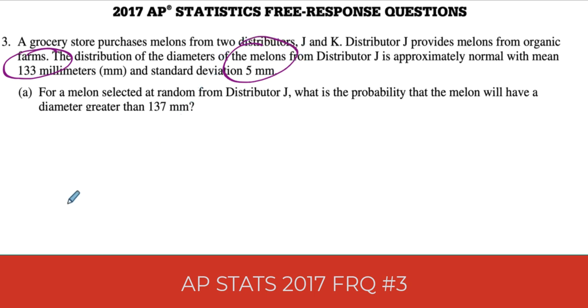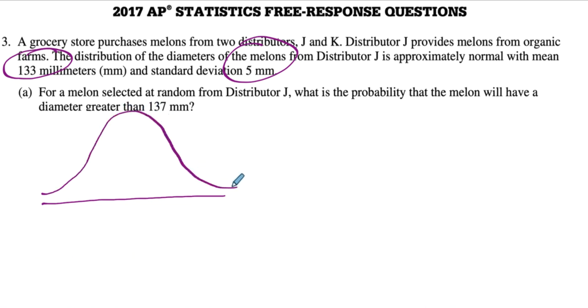When I answer this question, I always draw a picture. We're going to draw a normal distribution and label what mu is. Here mu is 133, that is the mean. I like to write up here that sigma equals 5. Then I'm going to label the x-axis so we can get a good idea of how things are spread out. Remember, there's an inflection point about one standard deviation away.